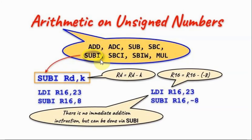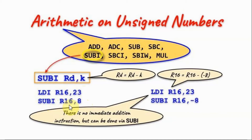Next, we have the subtract immediate instruction, and this is the syntax. Here in the operand, we are subtracting an 8-bit number from the destination, and the result goes into the destination. As an example, R16 has decimal 23, so we do subtract immediate: 23 minus 8, and the result goes into R16. In the AVR instruction set, there is no immediate addition, but it can be done indirectly using the subtract immediate instruction, and this example demonstrates that.